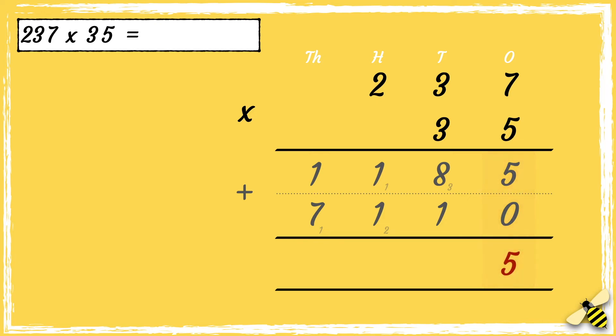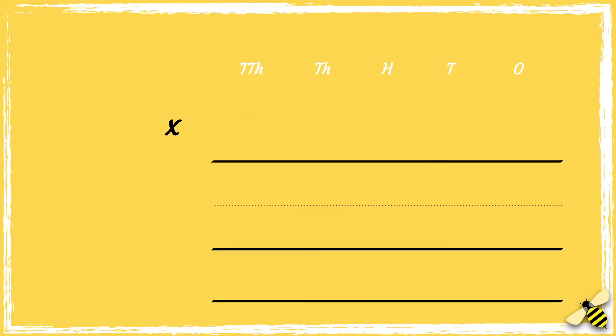The next step is to add the two answers together. 5 add 0 is 5. 8 add 1 is 9. Then 1 add 1 is 2, and then 7 add 1 is 8. So the answer is eight thousand two hundred and ninety-five.